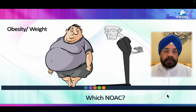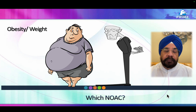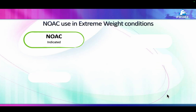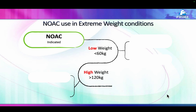We generally do not consider body weight as a very important aspect, but the plasma distribution volume of the drug is variable across all three drugs. In an obese person the plasma distribution volume is high compared to a thin, lean person. For example, if a patient where a NOAC is indicated has a low weight — less than 60 kg — we need to adjust the dose of apixaban.